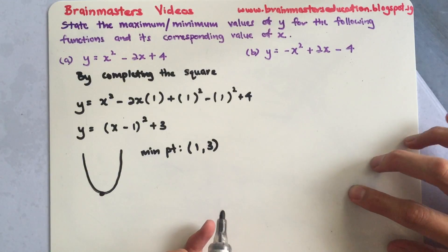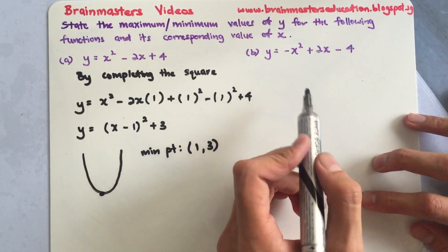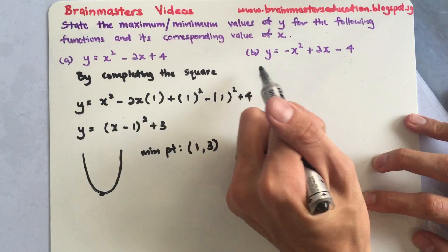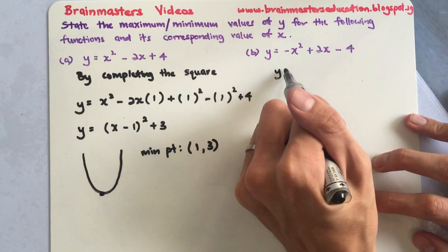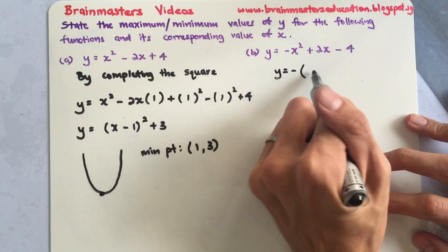Same for b, but just that b has a negative. What I will do is before completing the square, I will factorize out the negative.